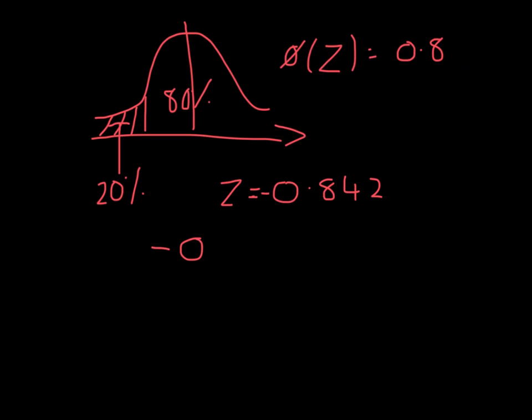So negative 0.842 has to equal the X value minus the mean, which was 1.68, divided by the standard deviation. I got that to be 50 over 1127.